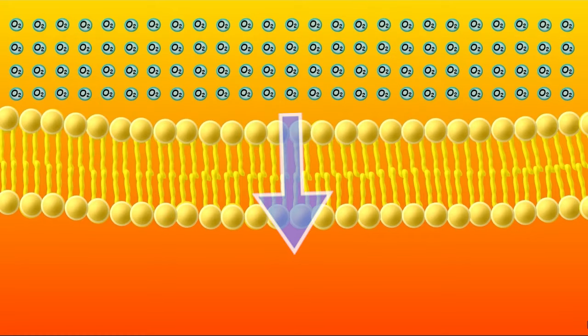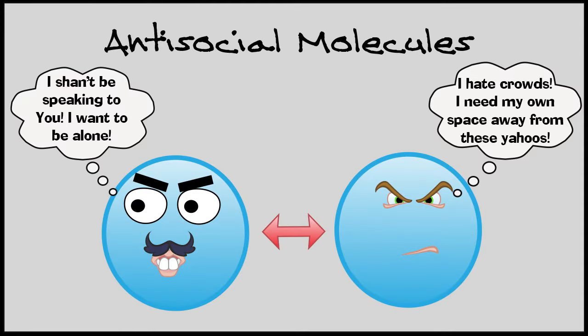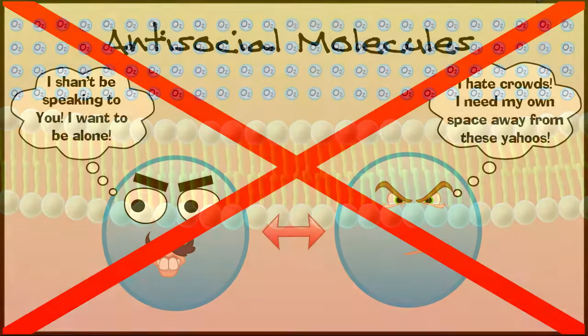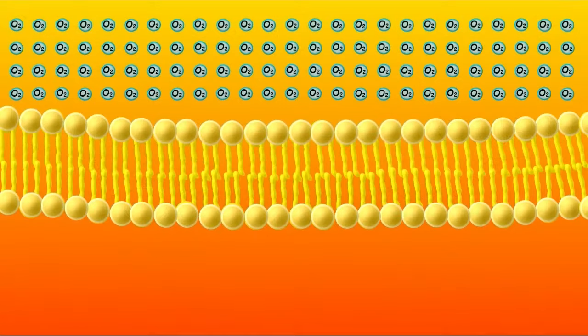But why do they do this? The answer is a bit more complex. Although we sometimes like to use analogies and say that molecules want to move from high to low or that they like to have personal space and spread out to avoid being close to others, in reality molecules don't really like or want anything. Instead, diffusion happens because molecules are in constant random motion.